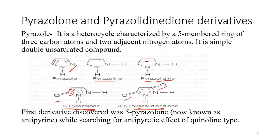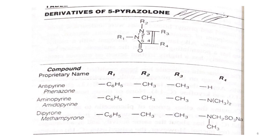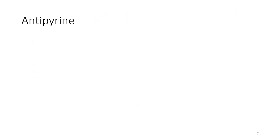The first derivative discovered from 5-pyrazolone, now known as antipyrene, was found while searching for the antipyretic effect of the quinoline type. These are the derivatives of 5-pyrazolone. In the general structure there can be substitution at nitrogen-1, nitrogen-2, the third position, or the fourth position. Different derivatives include antipyrene, aminopyrene, and dipyrone, which will be discussed one by one.